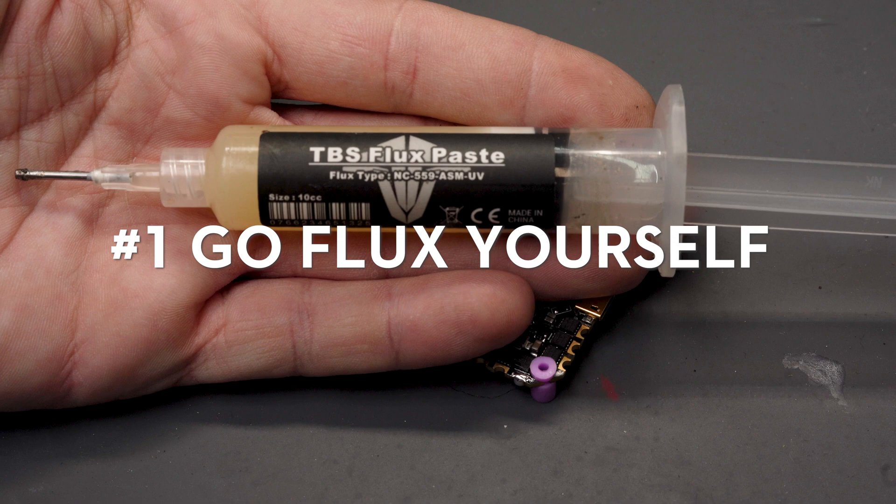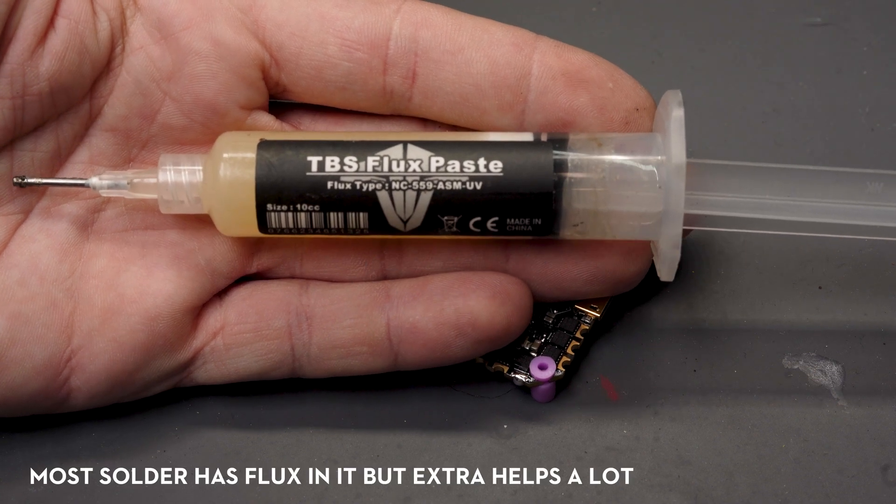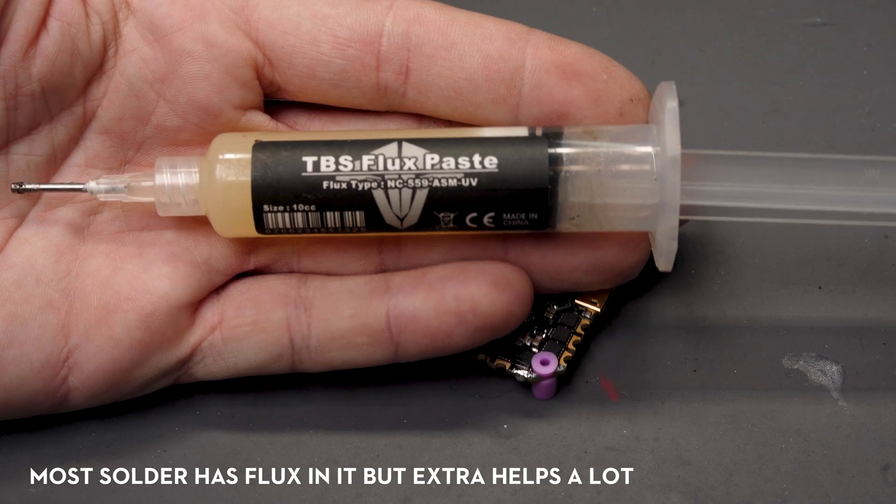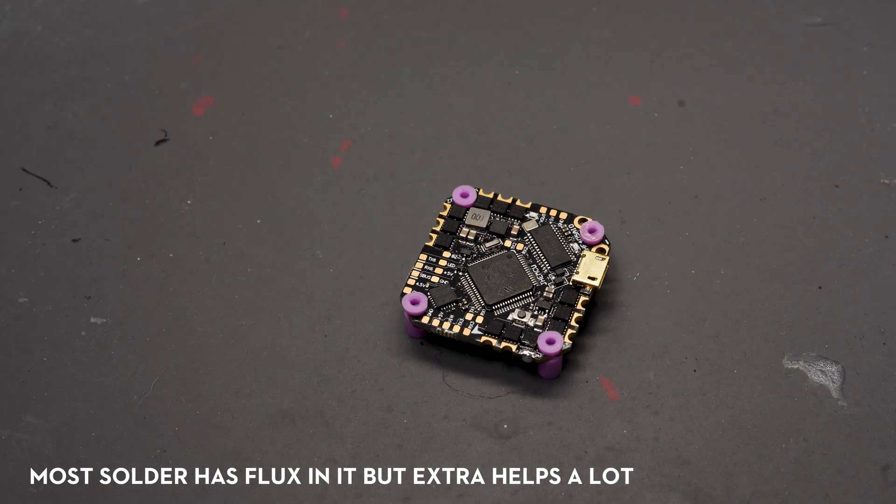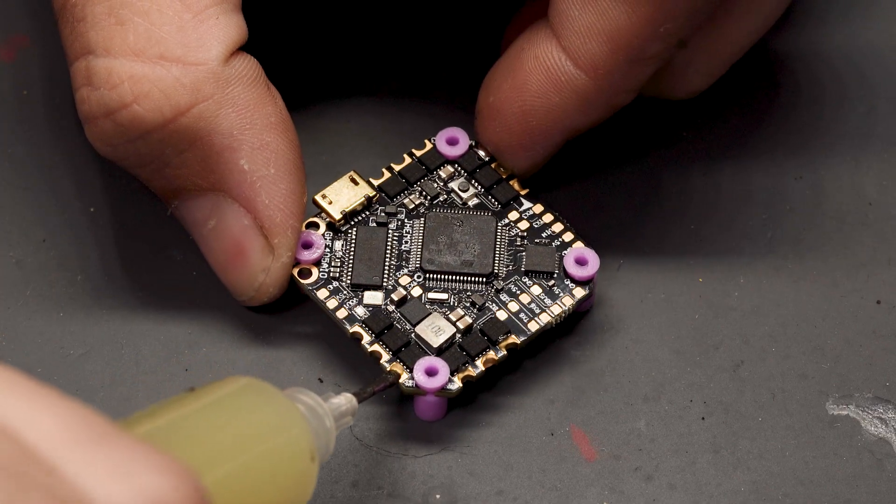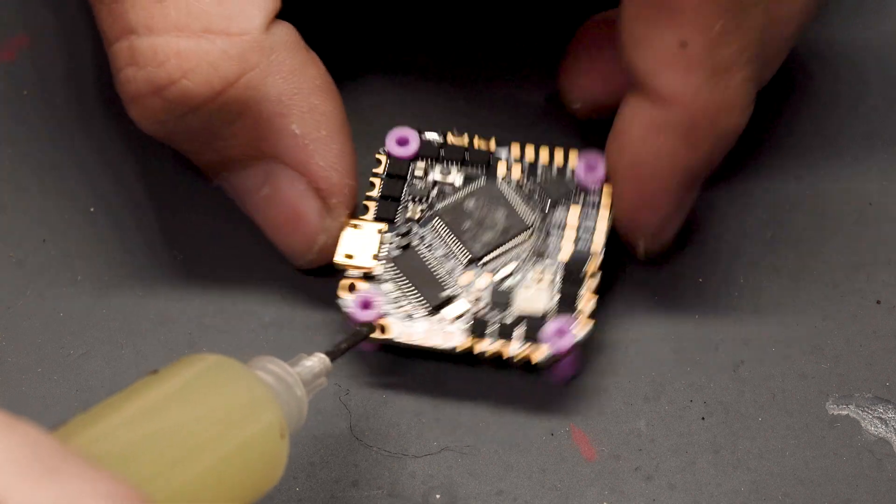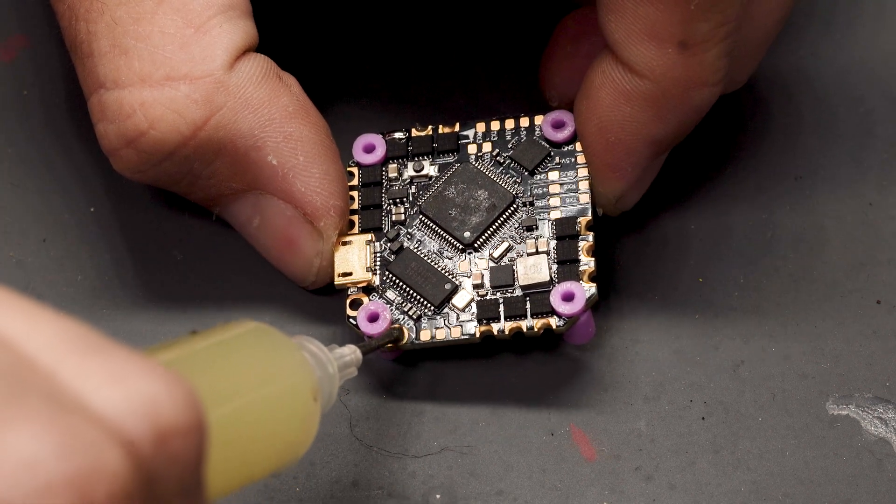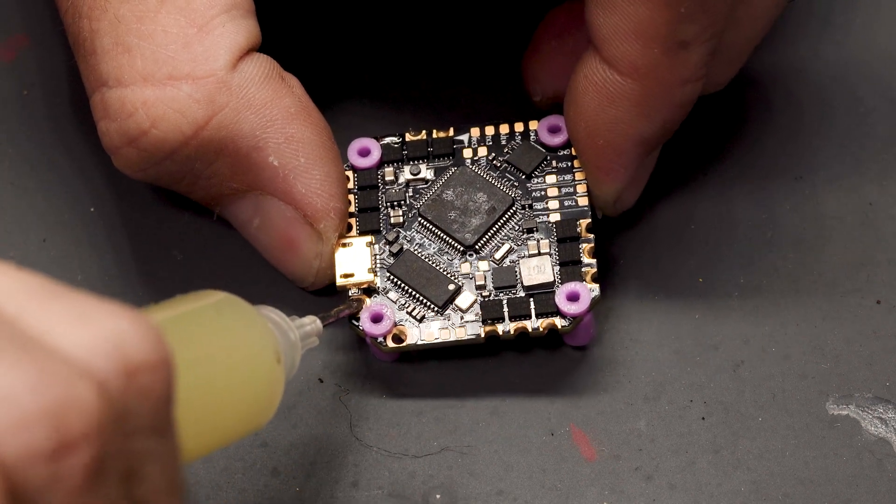Tip number one, flux always. Flux I haven't always used it but once I started using it I haven't gone back. It really just helps transfer the heat from your soldering iron to the solder and the pad itself which is crucial for getting a nice clean fast solder job.